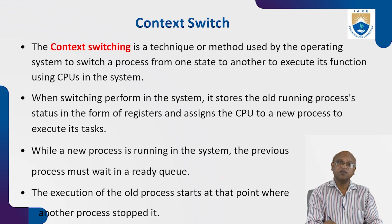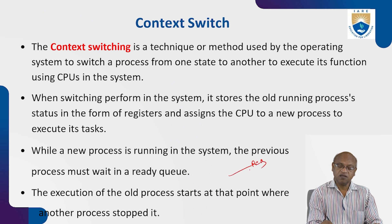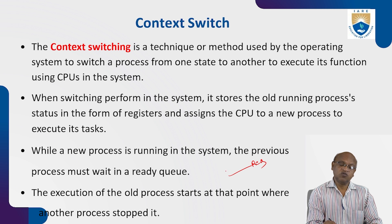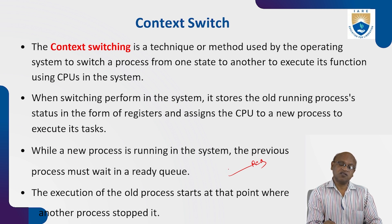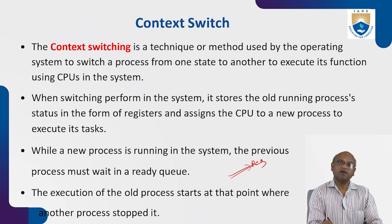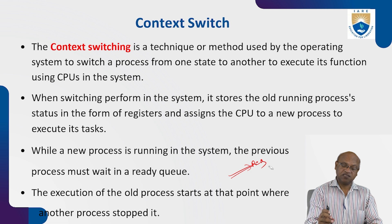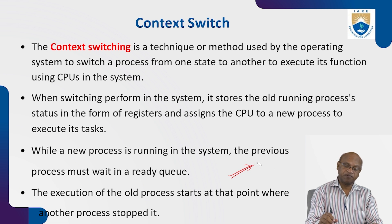When an interrupt occurs, whatever is running in the CPU is sent to a temporary register. Then the new process is sent to the microprocessor. After completion of that process, it automatically switches back to where the previous job was left off — which was saved in the temporary register — and that job is resumed.